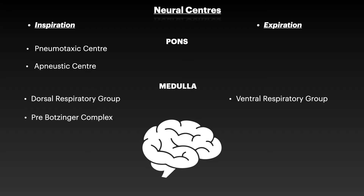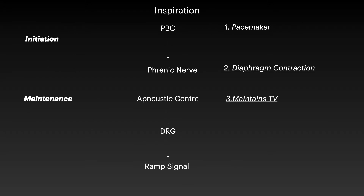To initiate inspiration, we require a pacemaker. The pre-Bötzinger complex serves as that pacemaker. It then sends signals to the spinal cord, stimulating the phrenic nerve, which causes diaphragm contraction — leading to inspiration. This results in the normal tidal volume of 500 ml.